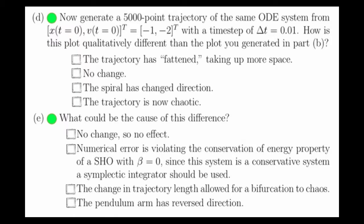For parts D and E, we need to generate a 5000 point trajectory of the same ODE system, and the same initial conditions, using a time step of 0.01, as we did in part B. And we want to see if there is a difference qualitatively between this plot and the plot using 500 points. Describe that difference if there is one, and if there was a difference, we need to try to diagnose that difference.